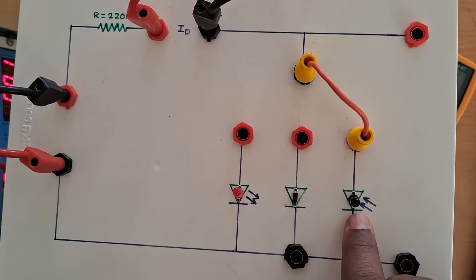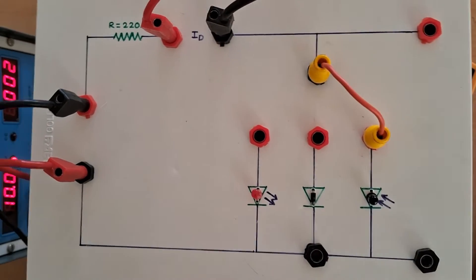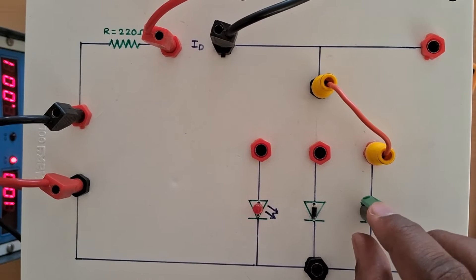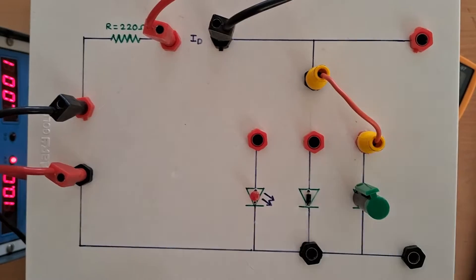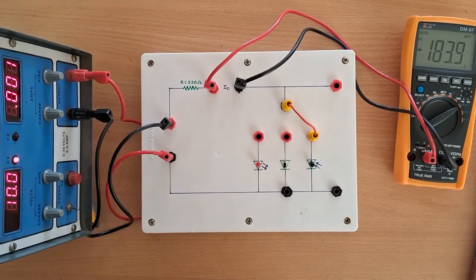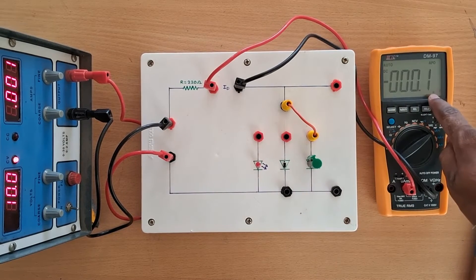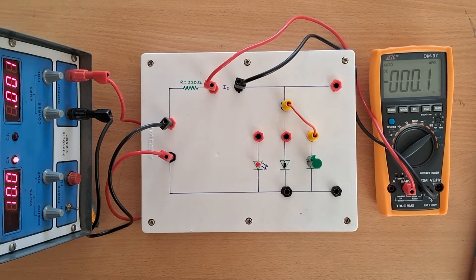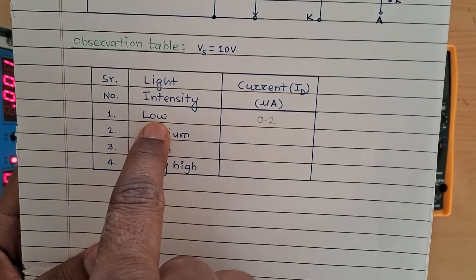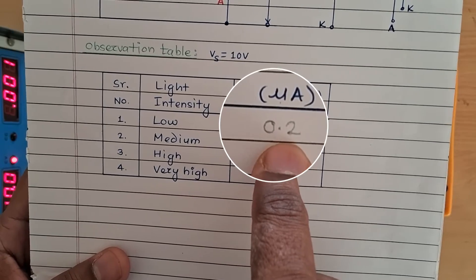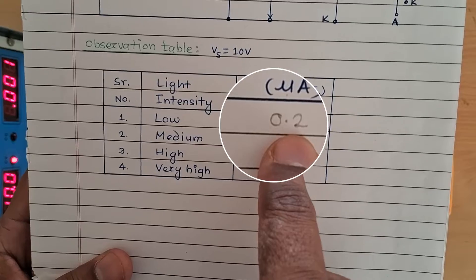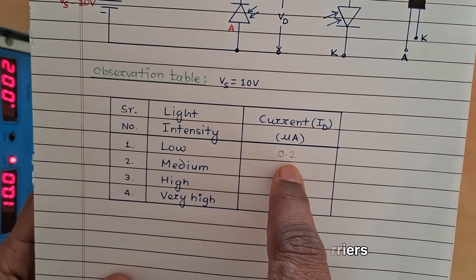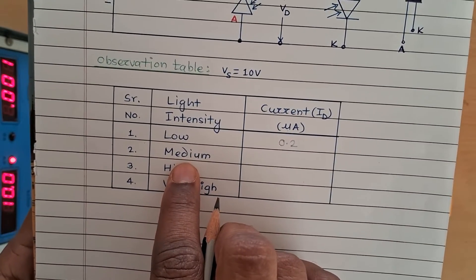If you want the intensity to be low, we can cover the photodiode with a non-transparent material — I have taken the cap of a pen. When you put the cap on the photodiode, no light will pass through and intensity will be lowest. The current flowing through the photodiode is almost zero — we are getting 0.2 micro-ampere. This current when the photodiode is completely in the dark is called dark current. In this experiment our dark current is 0.2 micro-ampere.